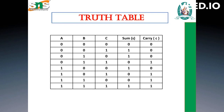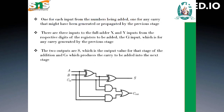This is the truth table, and here is the circuit — also called the logical diagram. It has one input from each of the numbers being added and one for any carry generated or propagated by the previous stage, so there are three inputs to the full adder. We have C-in and C-out. The circuit uses two exclusive OR gates and two AND gates.